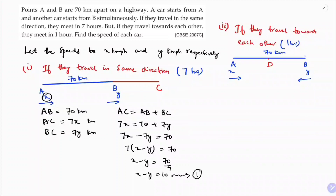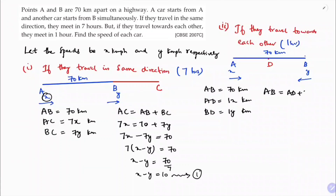AB is 70 km. AD equals speed into time, so AD is 1x, and BD is 1y. From the diagram, AB equals AD plus BD, so 70 equals 1x plus 1y. Therefore x plus y equals 70. This is equation 2.